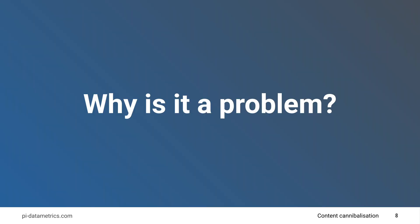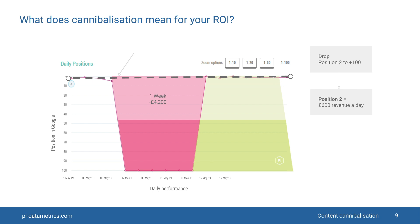So why is this a problem? Well, let's take a look at this example here. In this pie position explorer chart, this site has dropped from position two to outside the top 100 for a seven-day period between May the 4th and May the 11th. This is a money page — it's actually bringing in around 600 pounds a day from that position two for one of its key search terms. Due to that cannibalization, due to the fact that they haven't made it clear to Google which is the doorway into their world for this particular search term, they've lost a week's worth of visibility, which amounts to around 4,200 pounds in revenue.